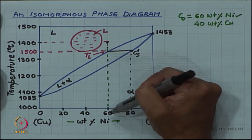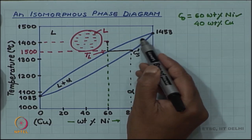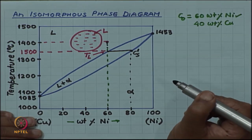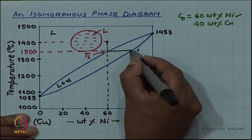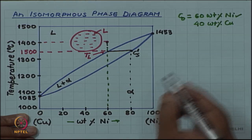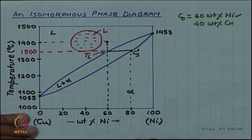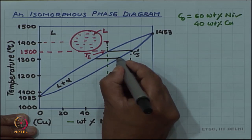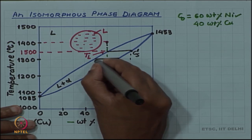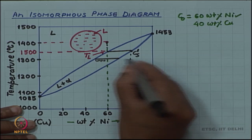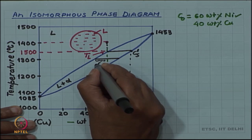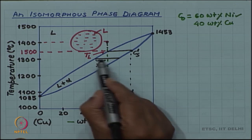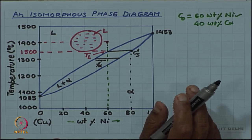The alloy composition vertical line intersects the liquidus boundary at the liquidus temperature — taken here as 1500 degrees Celsius. Wherever this horizontal tie line cuts the solidus line gives the first solid to form; for example, I am taking that to be 80 weight percent nickel. As you lower the temperature, the fraction of solid is given by the opposite lever arm. Since alpha is on the right side, the left lever arm is proportional to the fraction of the solid phase.